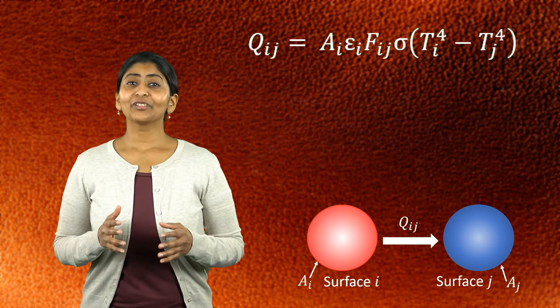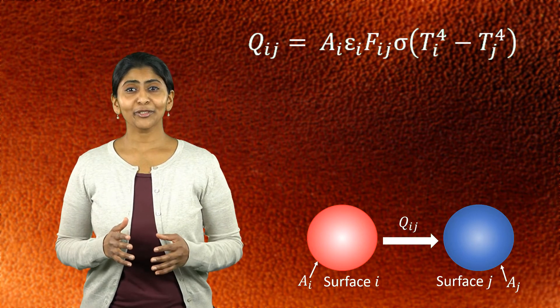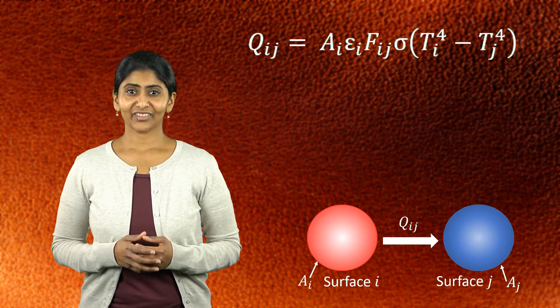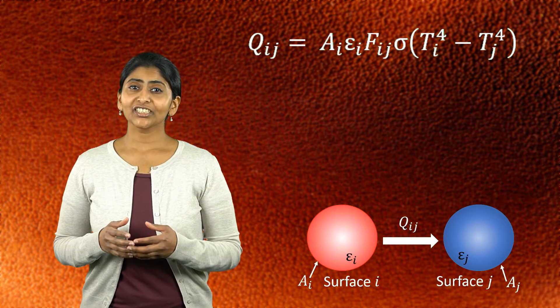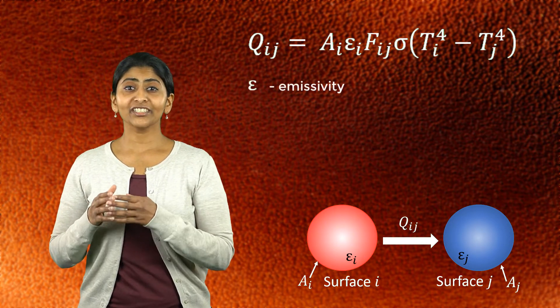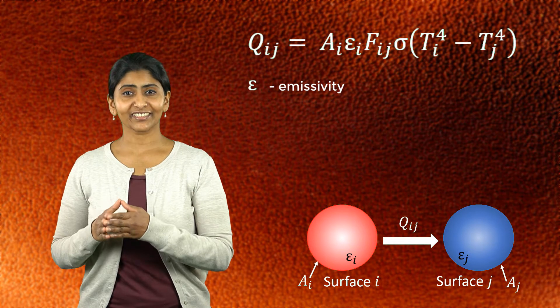Let's take a moment to discuss the terms that contribute to radiated heat. Epsilon is the emissivity of the surface, which is a measure of the amount of thermal radiation emitted by the surface.